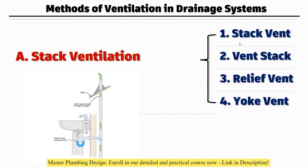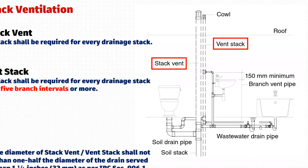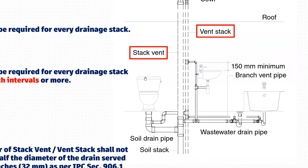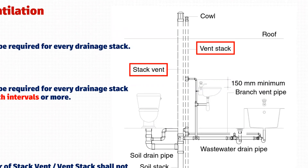We'll be dealing with four main types of stack ventilation: stack vent, vent stack, relief vent, and yoke vent. As you can see in the figure, we have a WC, lavatory, and bathtub all connected to a waste stack. The waste stack is limited up to a certain portion, and above that the waste stack is extended upwards — that extension is called the stack vent, in which no fixture waste is connected.